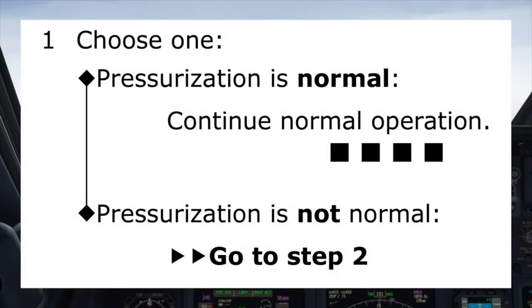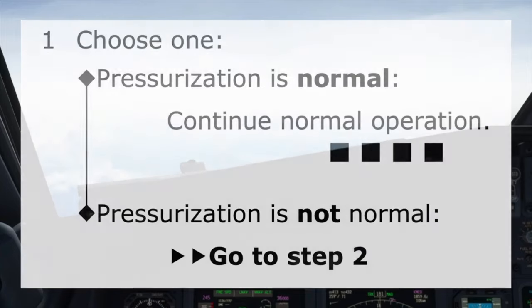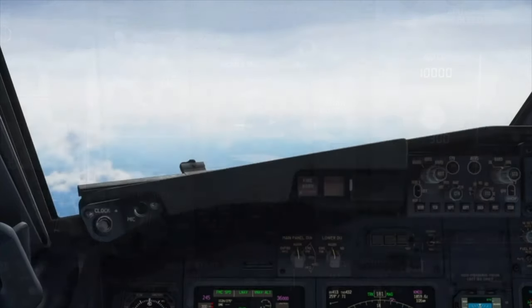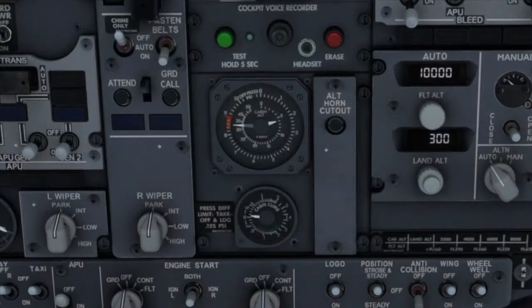The checklist starts with a conditional question depending on whether the pressurization is normal or not normal. A look at the cabin altitude panel shows the pressurization is normal.